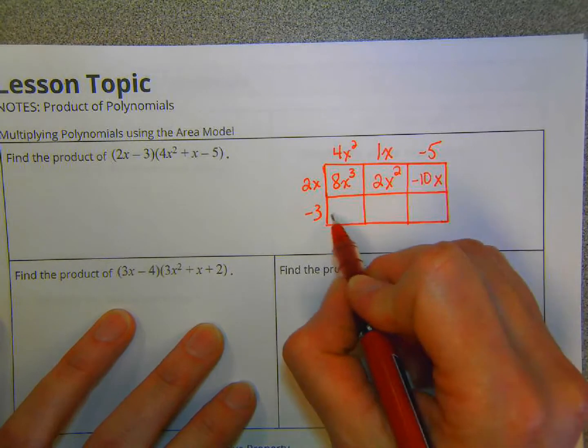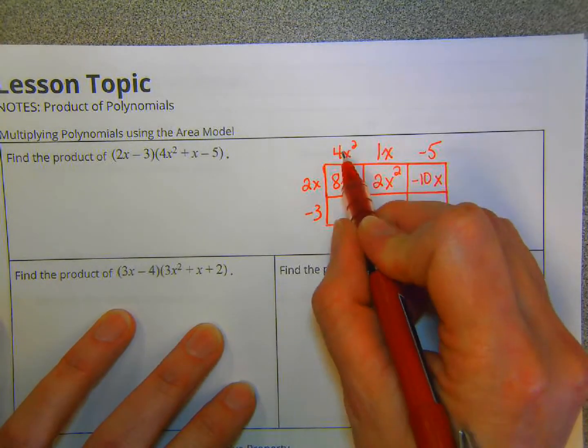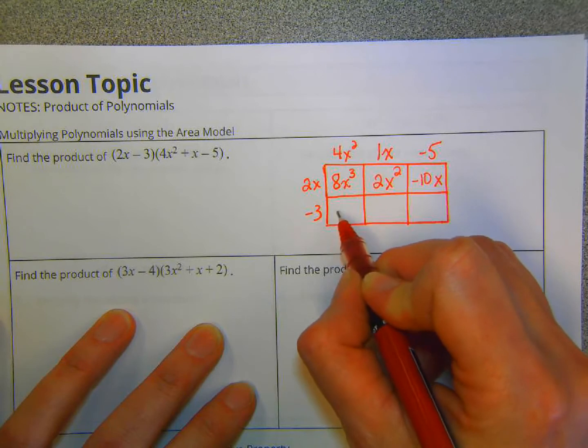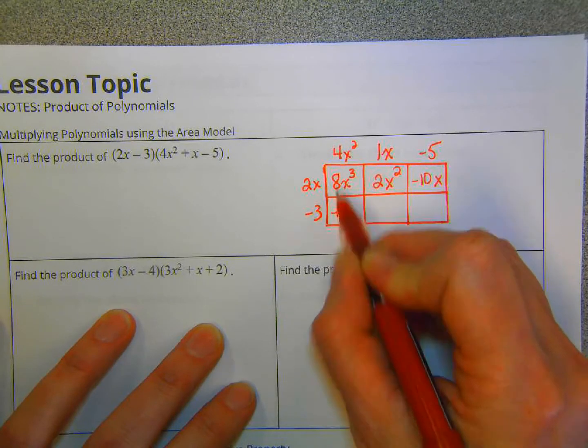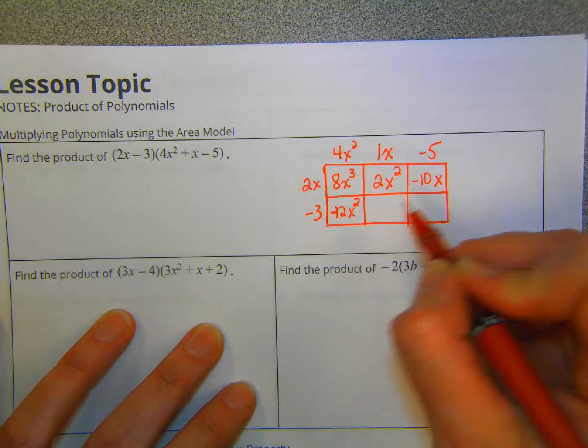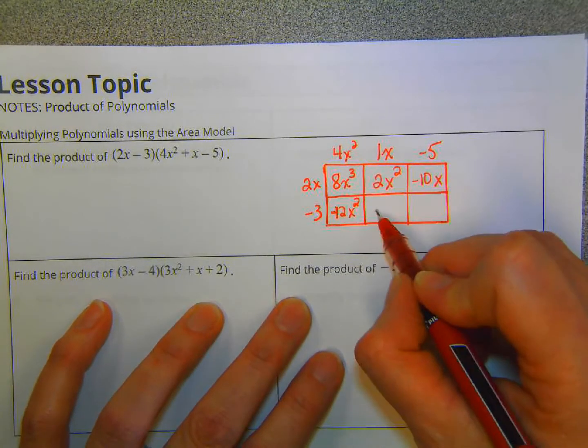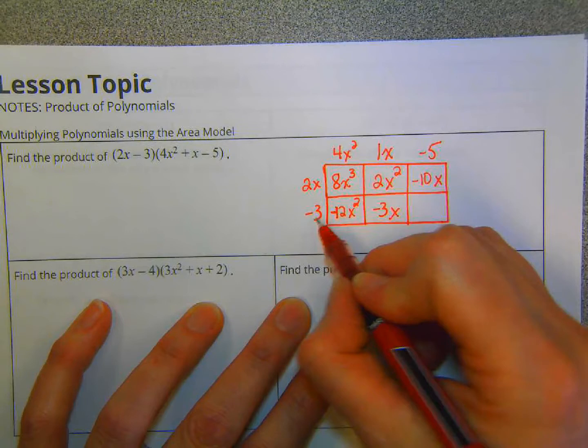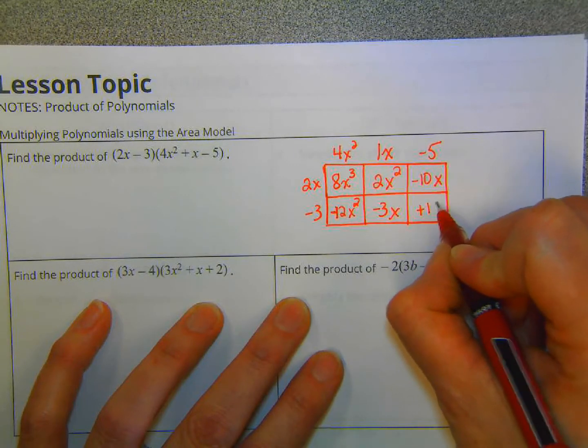For the bottom one, the bottom row, we're going to do negative 3 multiplied by each one of those. So negative 3 multiplied by 4x squared. That's negative 3 times 4 is negative 12. And we'll just write down the x squared. And then negative 3 times 1 is negative 3. And then just copy that x down. And then negative 3 times negative 5 is positive 15.